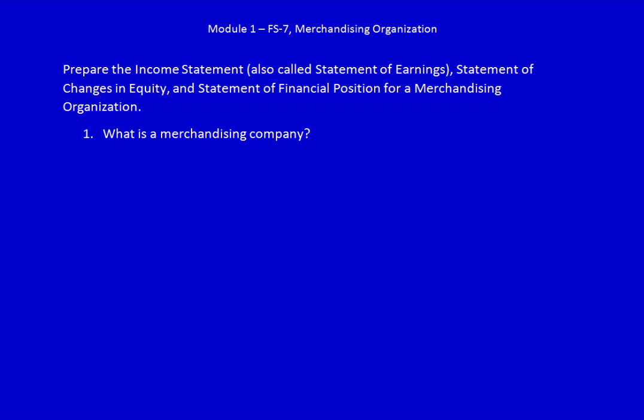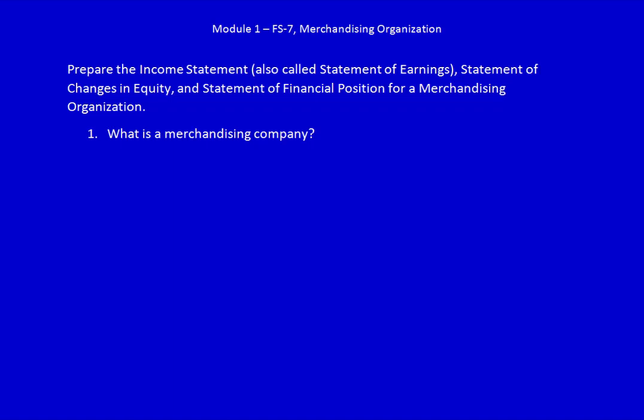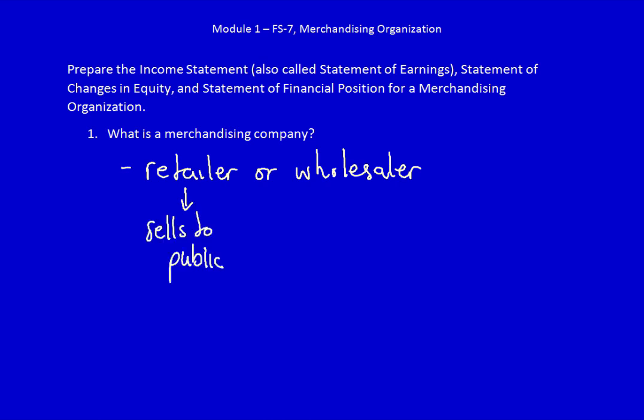We need to prepare the income statement, also called the statement of earnings, the statement of changes in equity, and the statement of financial position for a merchandising company. What is a merchandising company? A merchandising company can be either a retailer or a wholesaler. A retailer sells finished goods to the public. A wholesaler takes finished goods from a manufacturer and resells them to retailers. Both are in the business of selling finished goods.